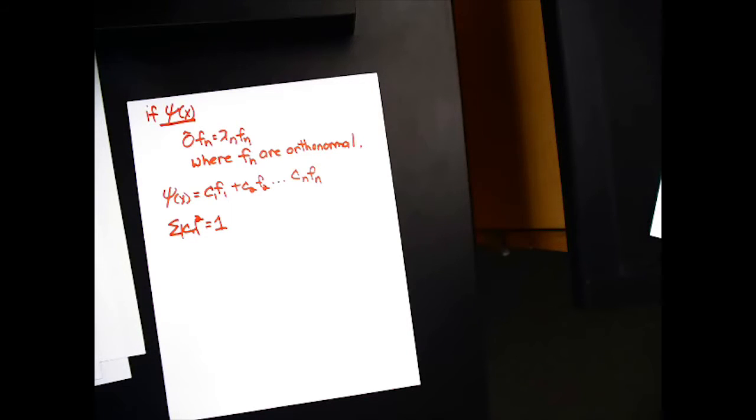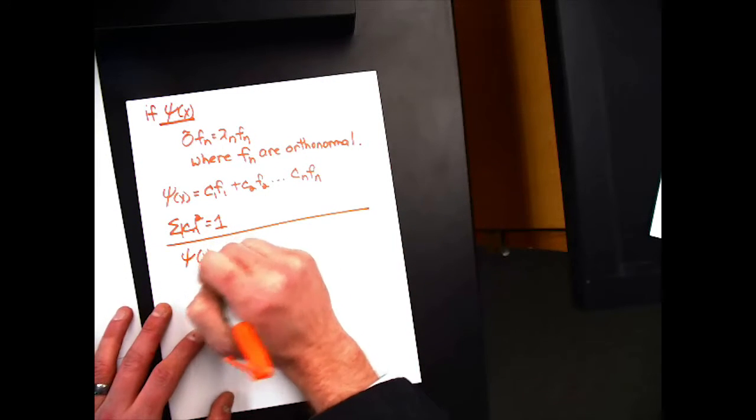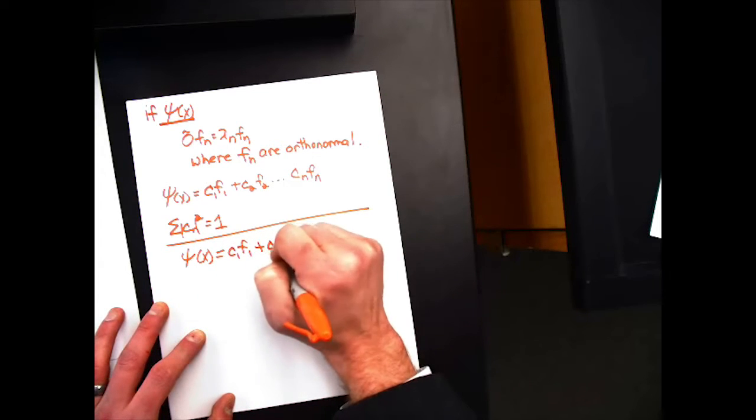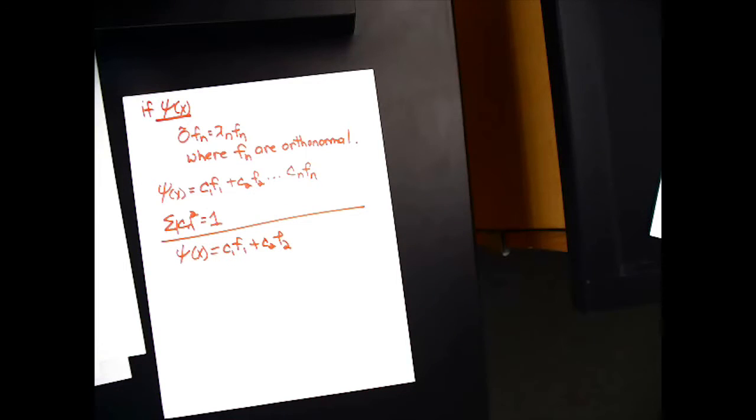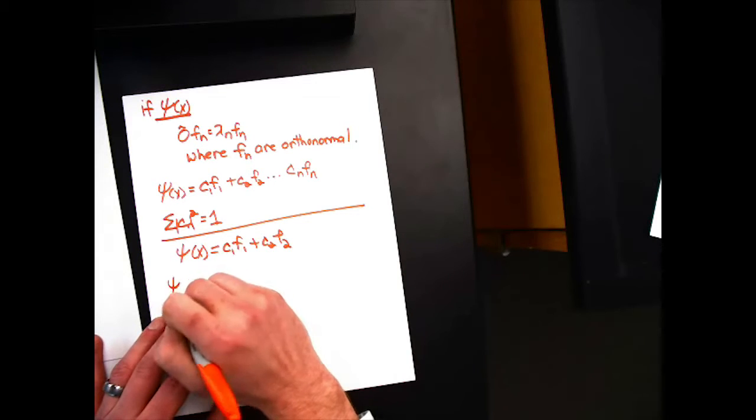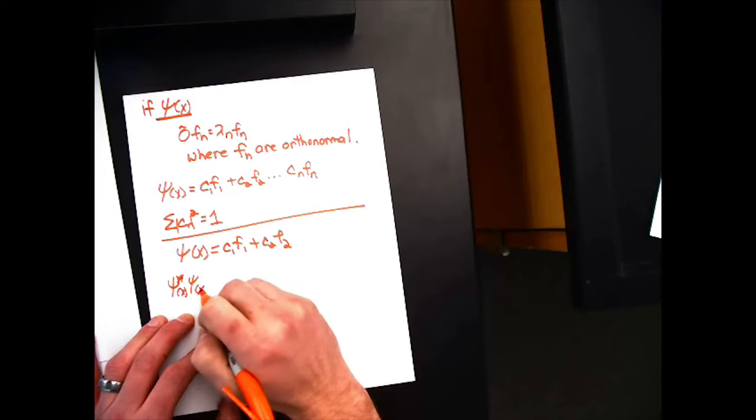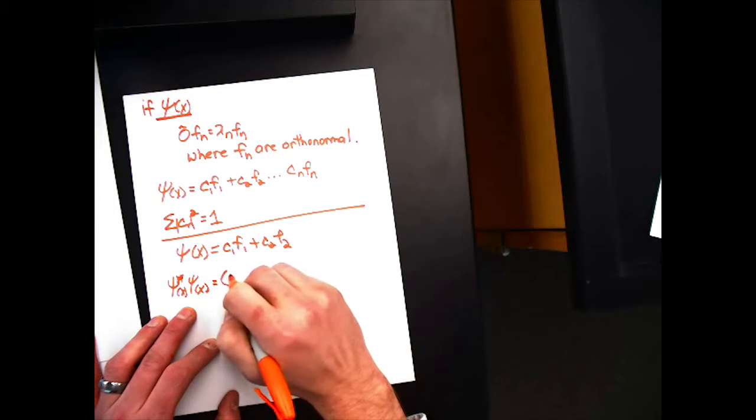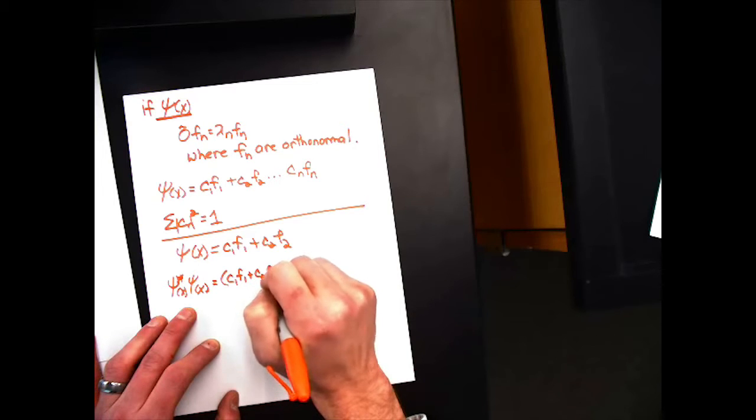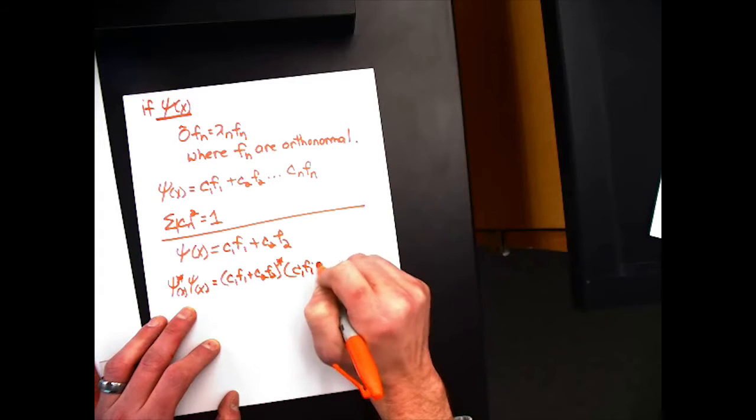Let's do a simple example. Let's write our wave function as c1 f1 plus c2 f2. What would my probability distribution be? My probability distribution is always psi star psi, which is c1 f1 plus c2 f2.